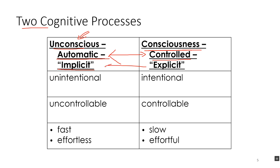So we have two sets of cognitive processes — implicit and explicit. All cognitive processes, including learning, memory, applying what we know, and recall, occur either consciously or unconsciously, automatically or in a controlled fashion.